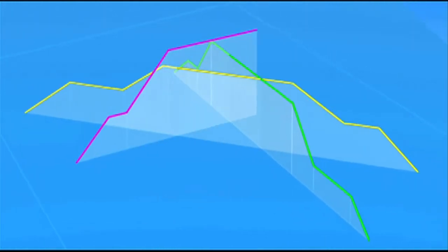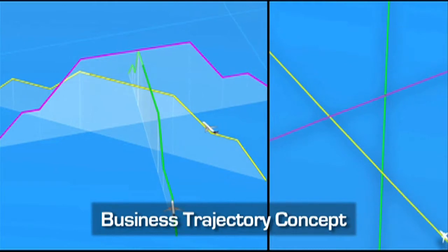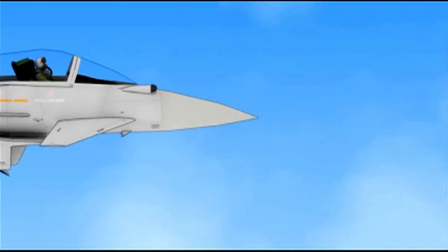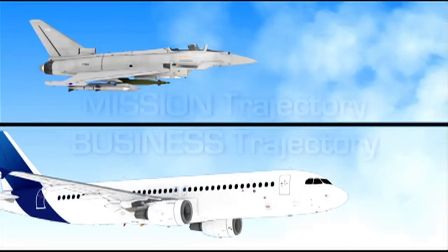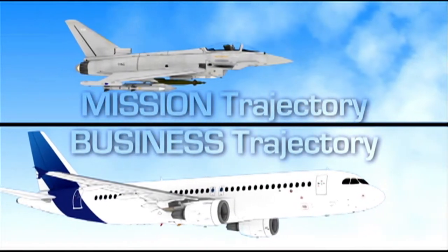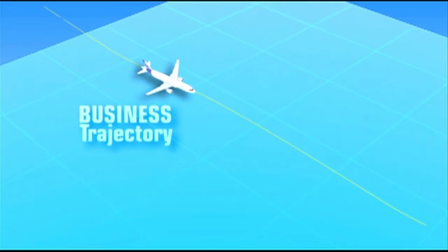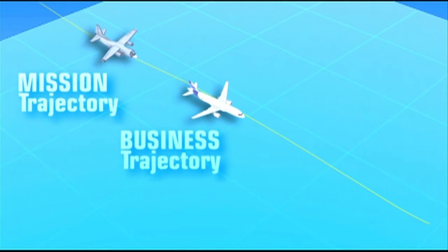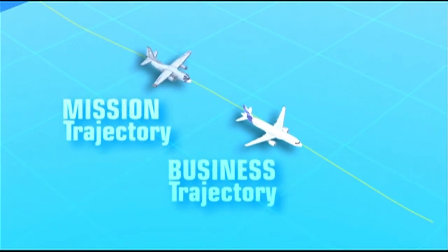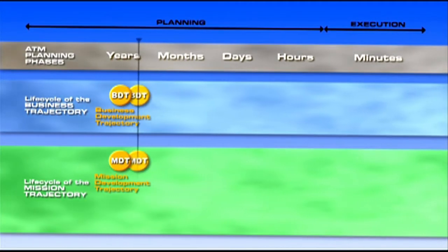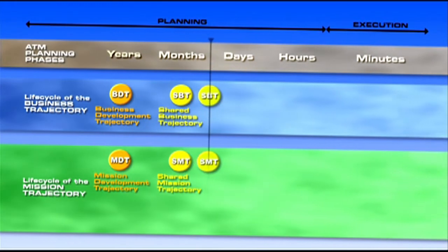Central to the CESAR concept is the business trajectory — a contract between all ATM players. When addressing the military, CESAR refers to mission trajectory rather than business trajectory. It is essentially the same and follows the same pattern, but a mission trajectory addresses different mission requirements and planning cycles. Some mission trajectories can be processed as business trajectories, but because some military missions are by nature more complex, the trajectory could differentiate a lot depending on the type of missions and their objectives.